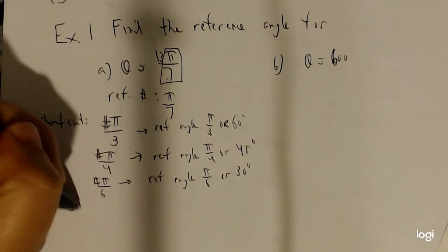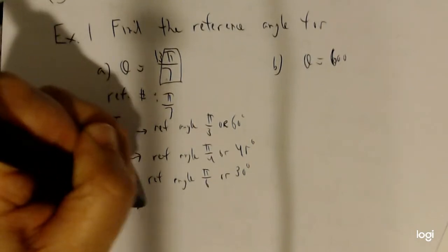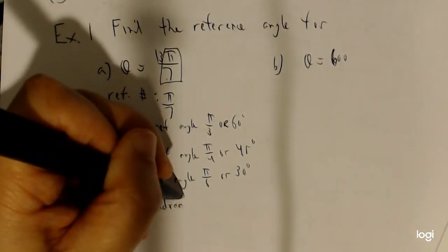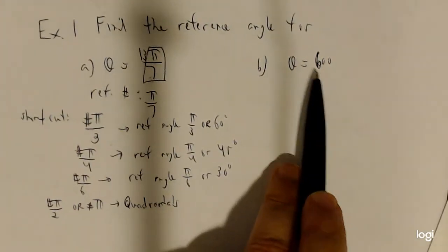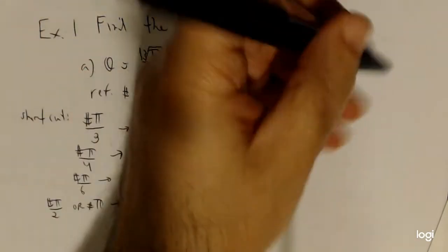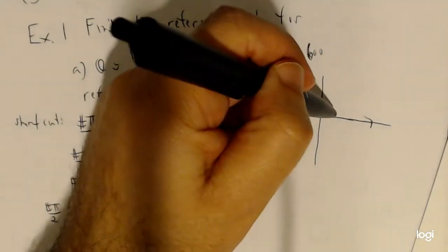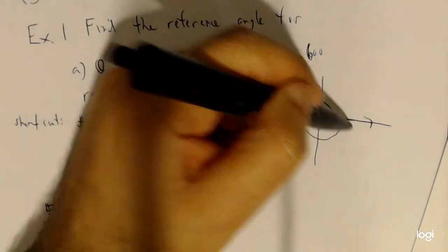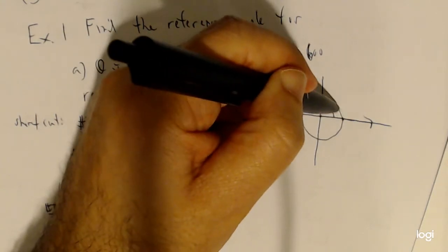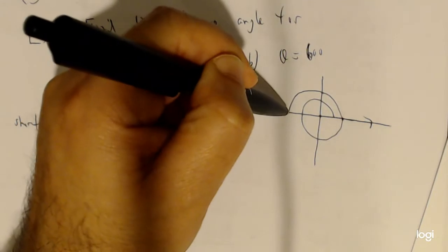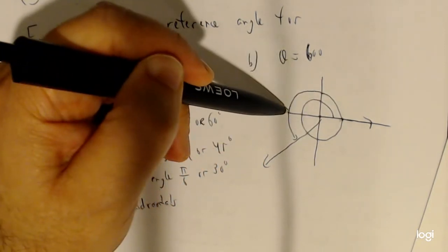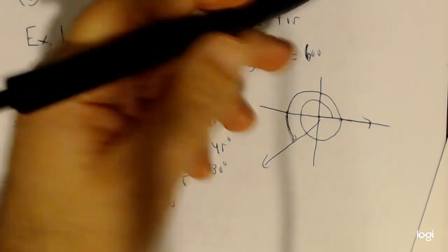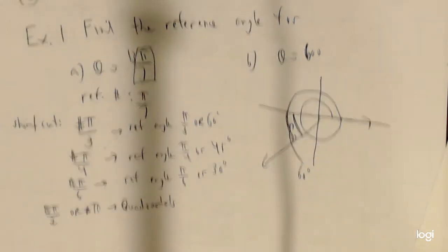If I have π over 2 or just π, those are quadrantals. For part b, theta = 600° in degrees, the approach is slightly different — we draw the angle. Going around: 360 is one full circle, then 450, 540, and 600 puts me 60° past 540. So the reference angle is 60 degrees.